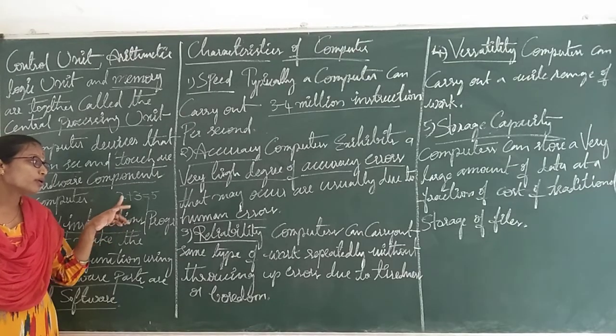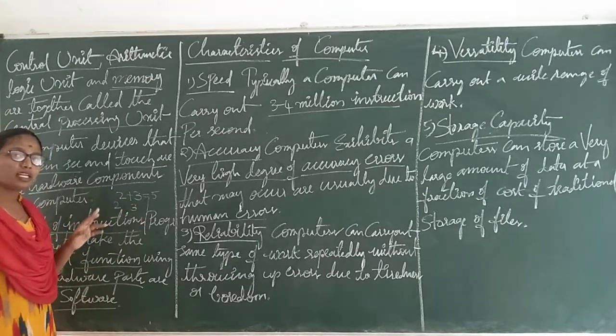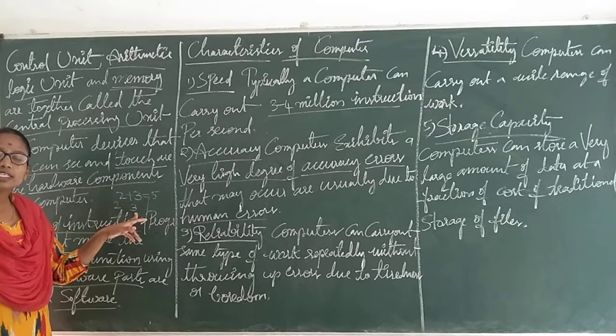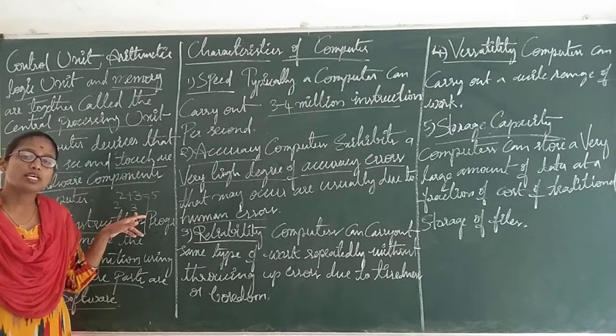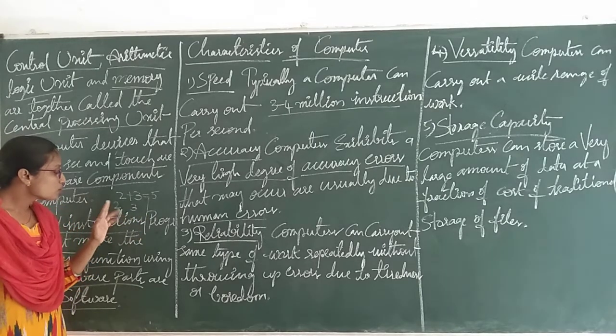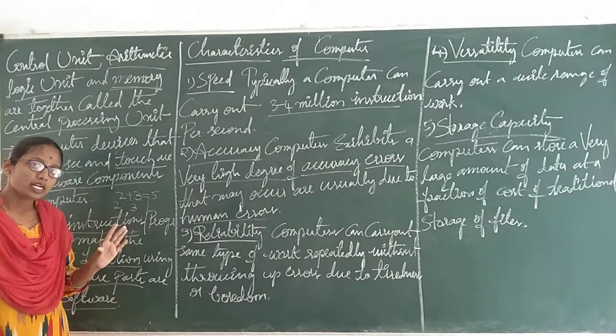For example, here I am taking 2 and 3. These two numbers we call data. Data is raw facts which does not have a perfect meaning initially.